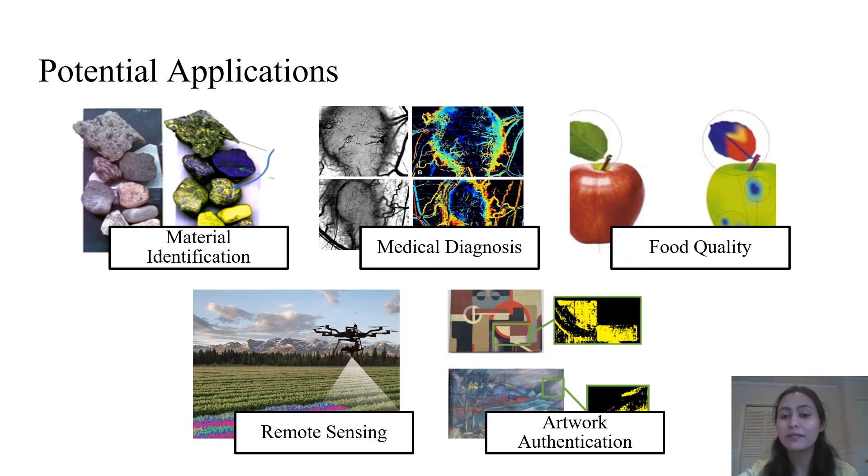Initially, hyperspectral imaging was implemented on satellites and airborne platforms but recent technological advances for capturing and processing devices have made it useful in numerous applications such as material identification, art authentication, medical diagnosis and food quality processing.